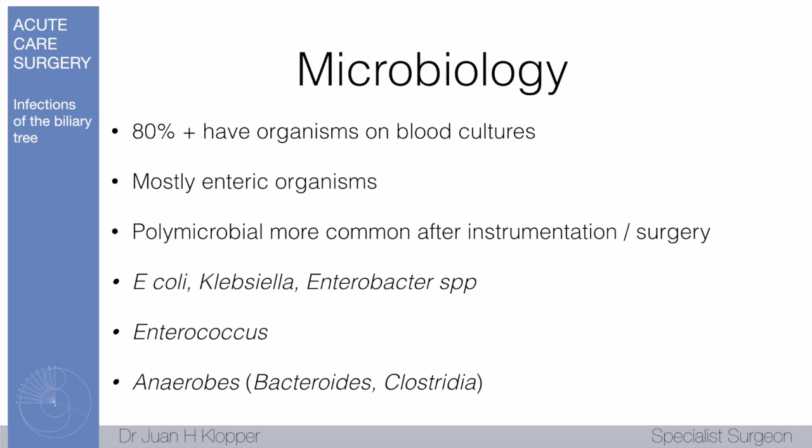80% of people will have organisms on a blood culture, so it is very important to do blood cultures before starting broad spectrum antibiotics as the patient is admitted and diagnosed. Most of these organisms are enteric in nature — gram negatives. Once a patient has had instrumentation such as ERCP or surgery, most of these infections become polymicrobial and you can see gram negatives, gram positives, and anaerobes.